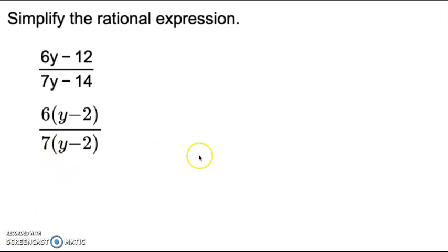Now we're not being asked to find restrictions this time, so we can go right ahead and simplify. y minus 2 over y minus 2 can reduce to 1, and we're left with 6 over 7.